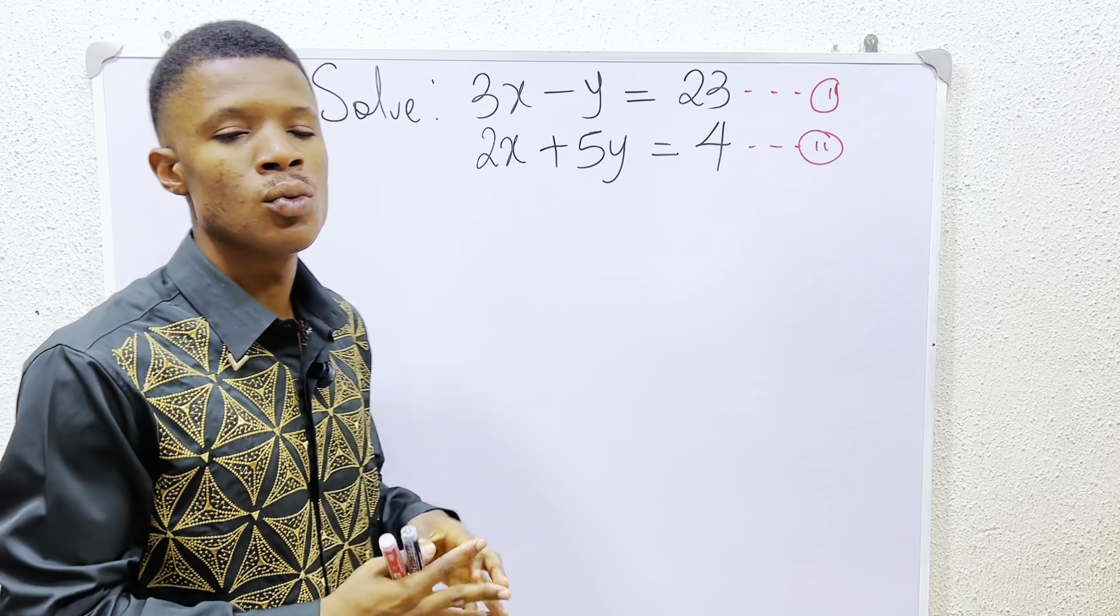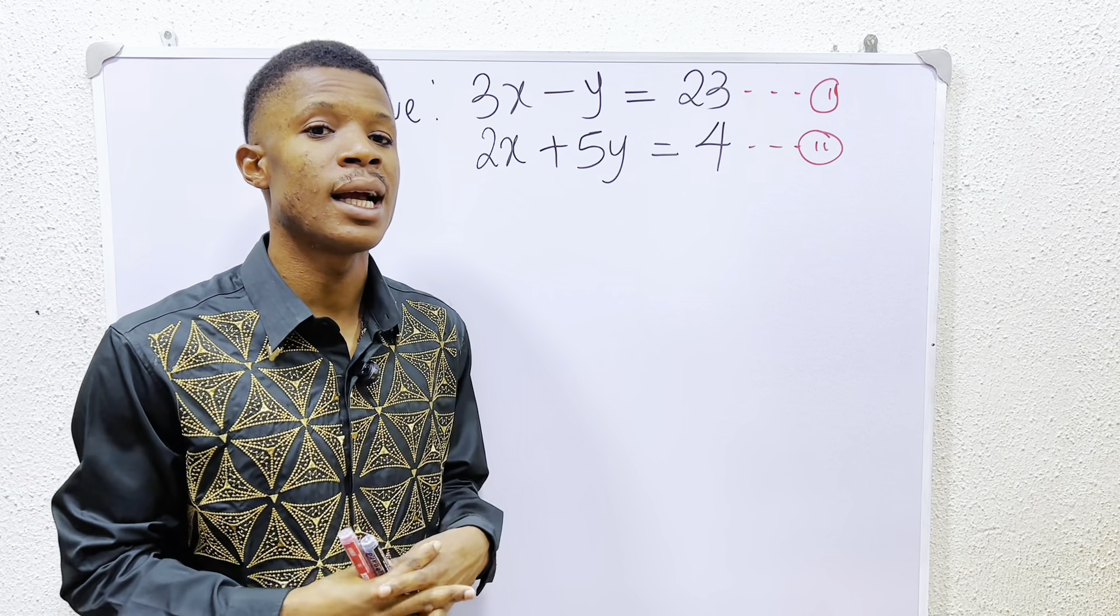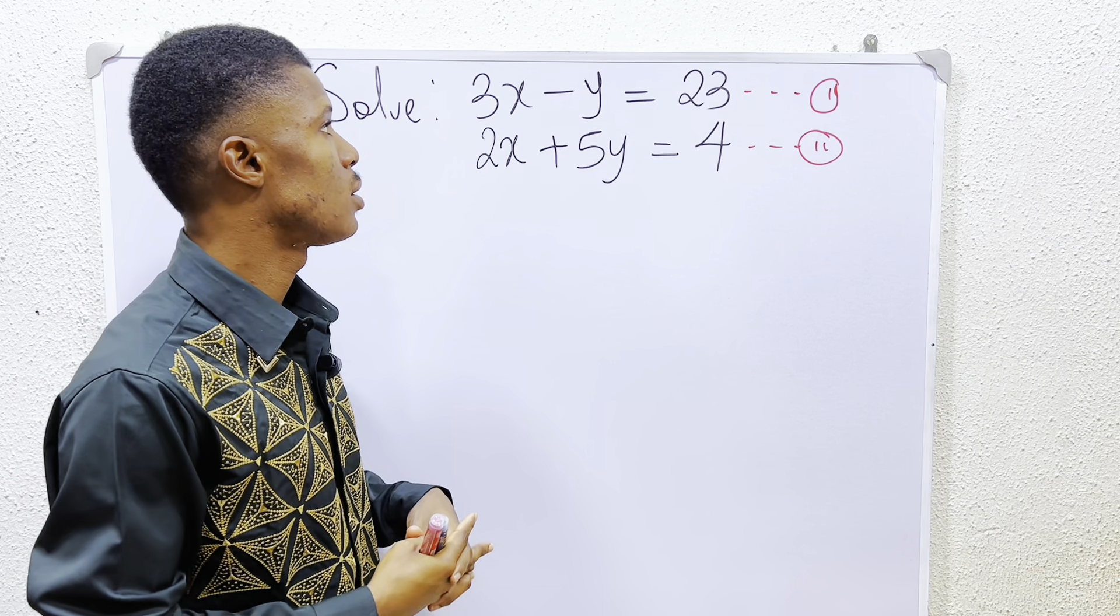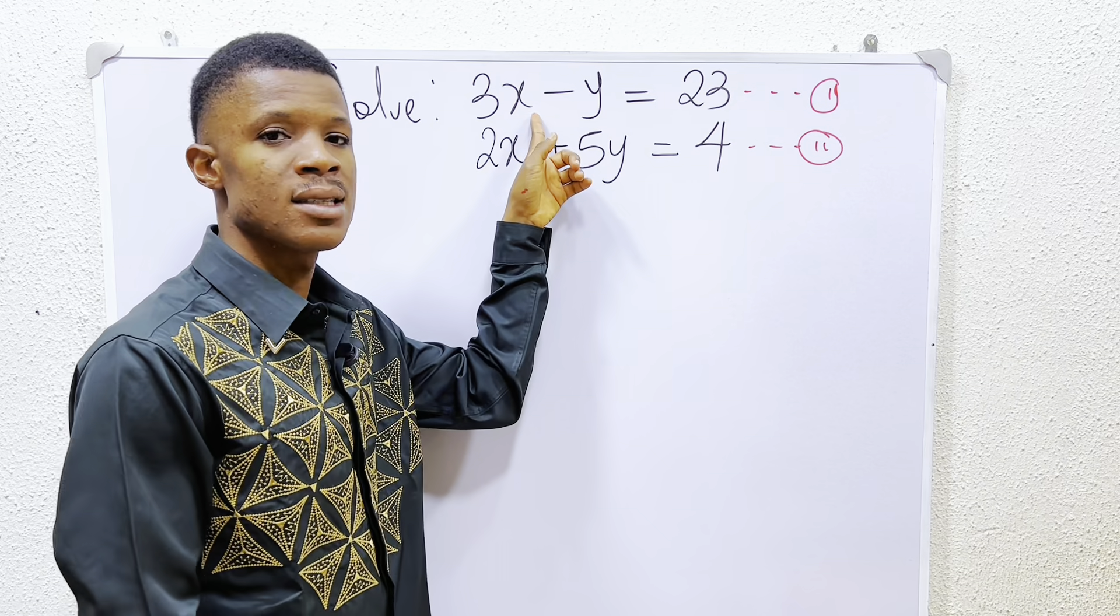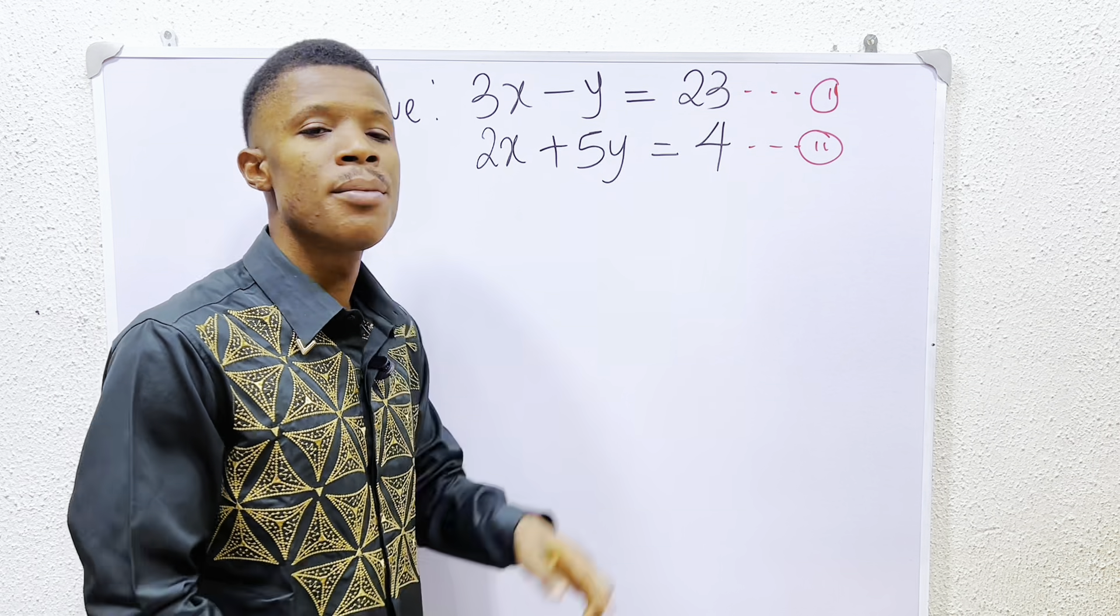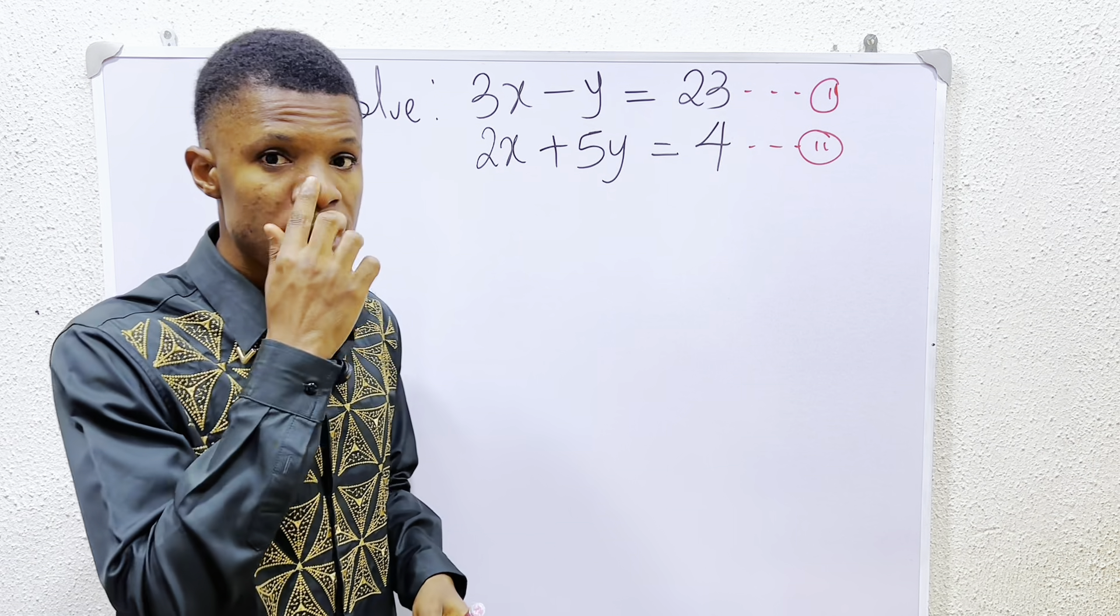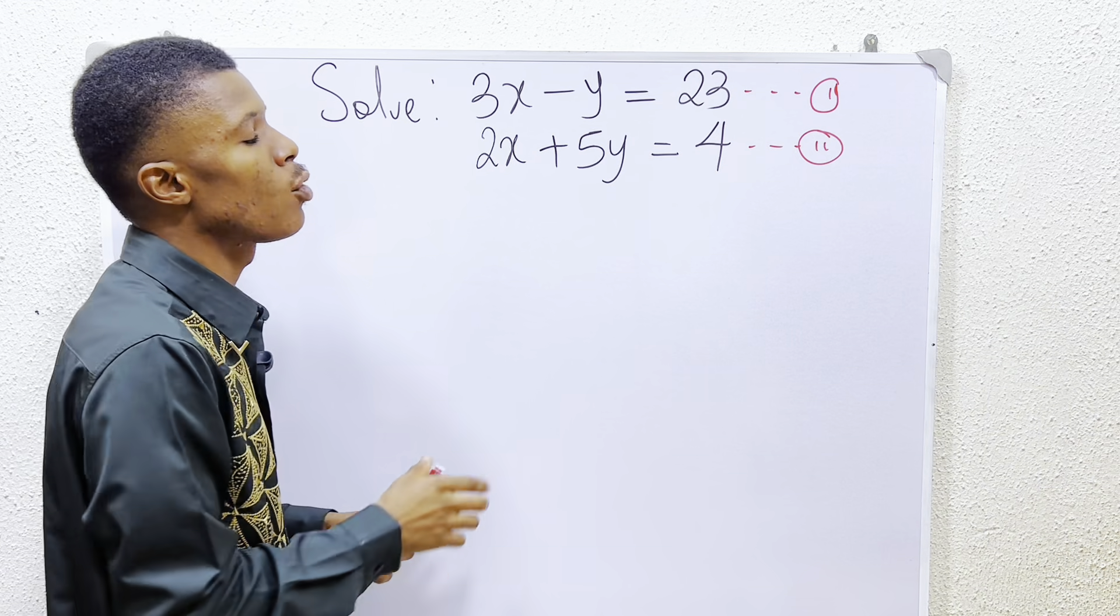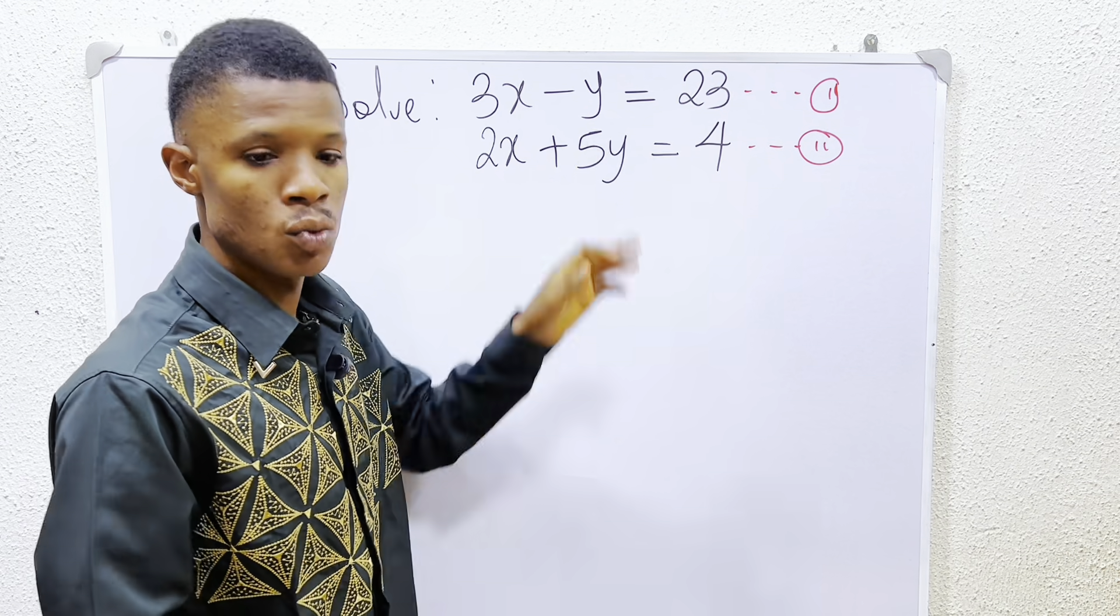Then if you look at the two equations, you think of the first one that can be easily made the subject of the formula. Are we making x the subject of the formula, or are we making y the subject of the formula? For me to do this, I would simply make y subjects of the formula from equation 1.